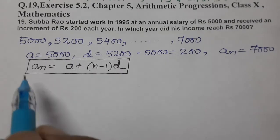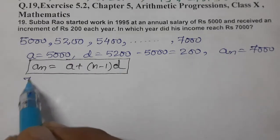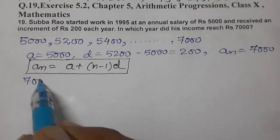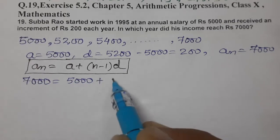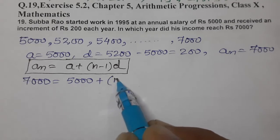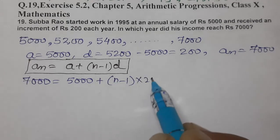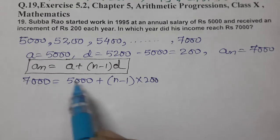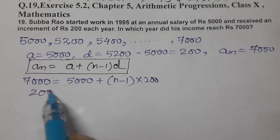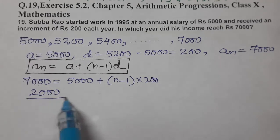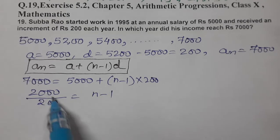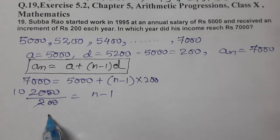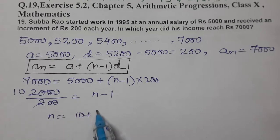So, A kitna hai? An hai 7,000. A hai humare paas 5,000, plus N minus 1 — N hume nikalna hai — aur D kitna hai? 200. So, 7,000 minus 5,000 equals 2,000. 2,000 ko divide karenge 200 se, equals N minus 1. So, N ki value aayegi 10 plus 1, yaani 11th.